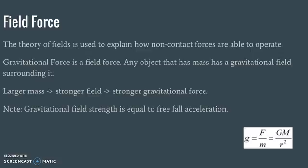The gravitational field strength g is equal to the gravitational force divided by whatever mass is in that field. This is analogous to the electric field, where electric field strength equals force divided by the test charge. Here, the gravitational field strength equals the gravitational force divided by the test mass. The gravitational field at a location is determined by the gravitational force experienced at that location.